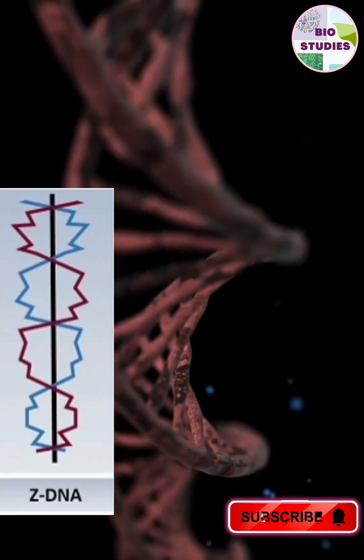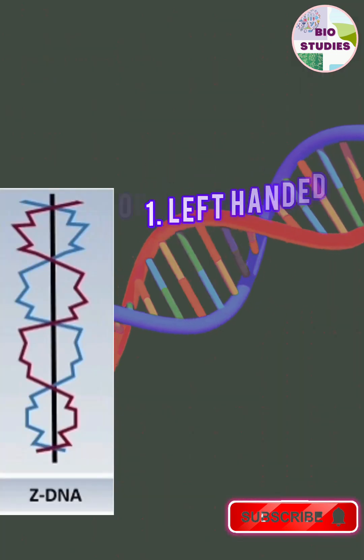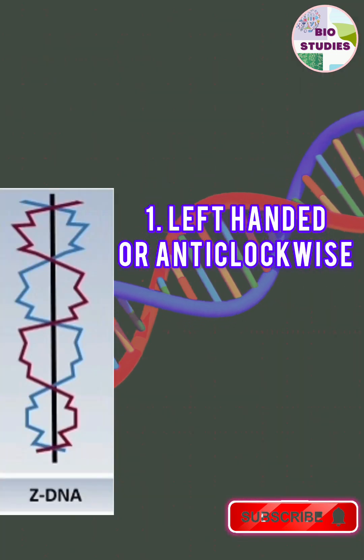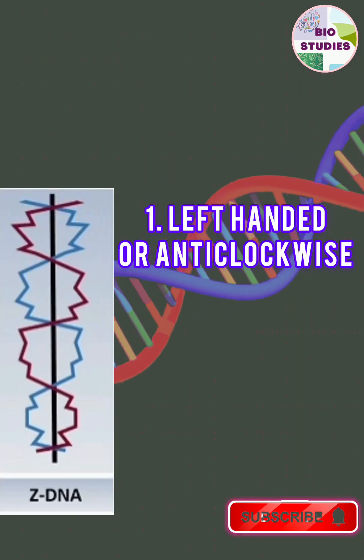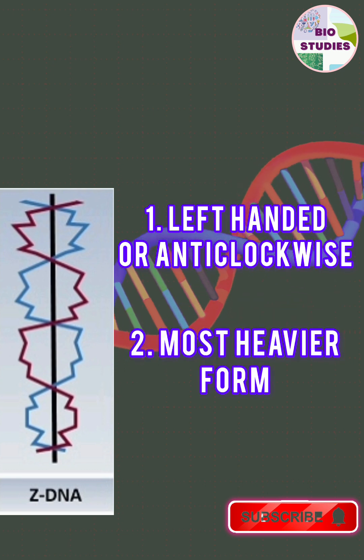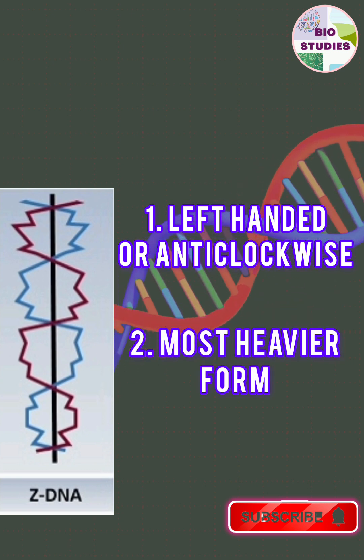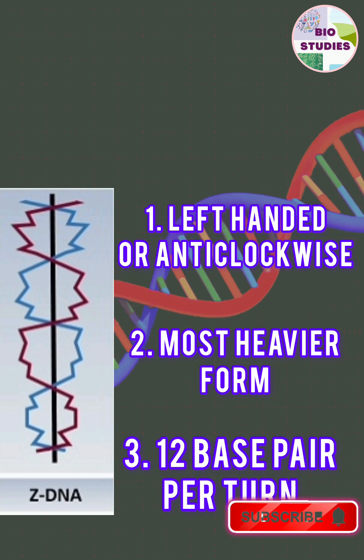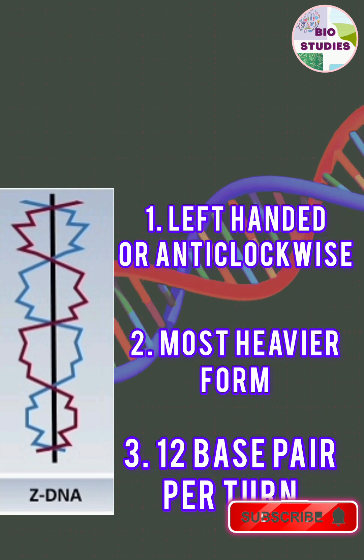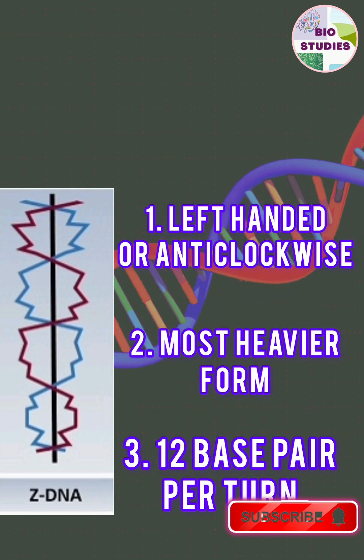Last is Z-DNA. It is left-handed or anti-clockwise. It is the heaviest form and there are 12 base pairs present per turn.